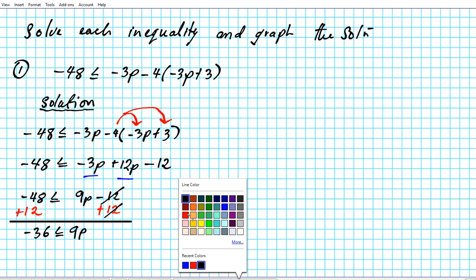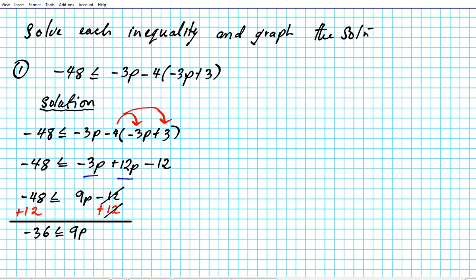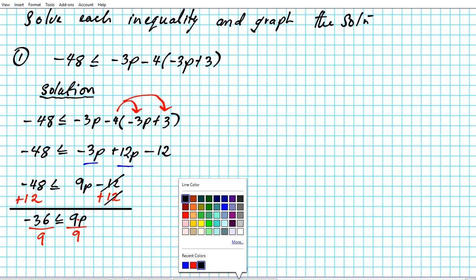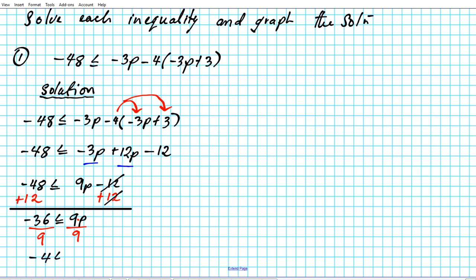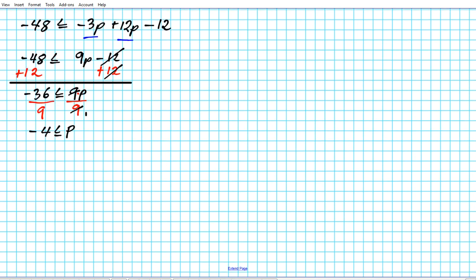Lastly, we want to isolate p. The relationship between 9 and p is multiplicative, so we divide both sides by 9. That gives us: negative 4 ≤ p. We can switch this around to put the variable on the left side, which makes it easier to graph. When we switch it, we get: p ≥ negative 4. When you switch the order of variable and constant, you also switch the inequality symbol — the inequality was pointing left, and now it points right.